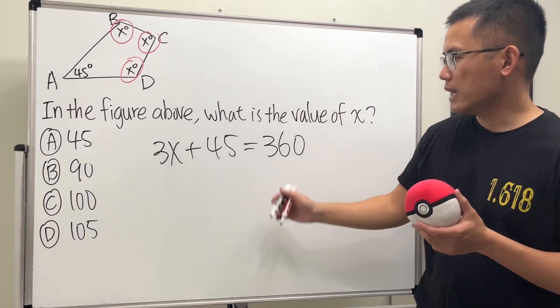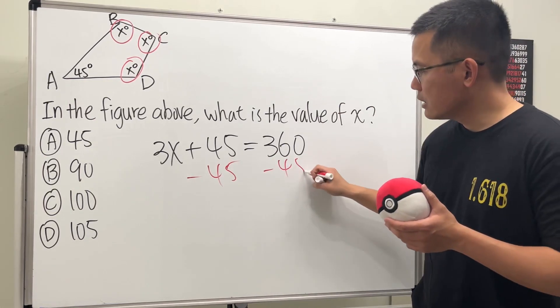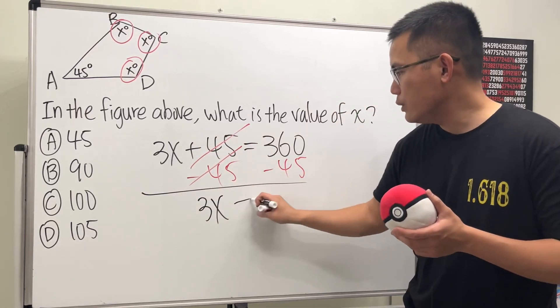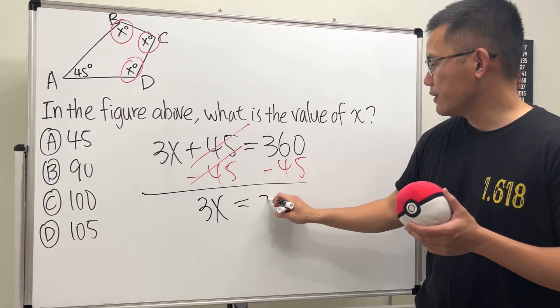And then just work it out. So that's minus 45 on both sides. So cancel this, and then we get 3x. And that's equal to 315.